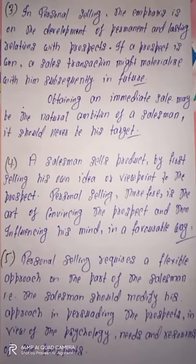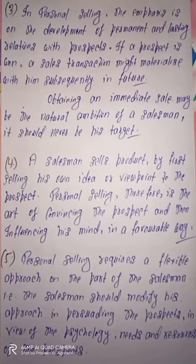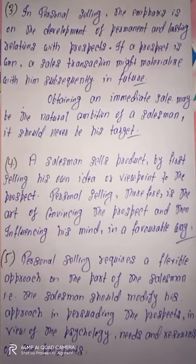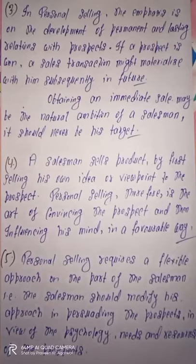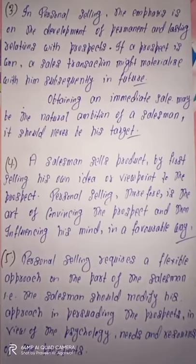The next feature is that personal selling requires a flexible approach on the part of the salesman. Flexible ka matlab hai ki use apne behavior mein modify karna padega as per the psychology, needs, and resources of the prospects. Salesman ko apni persuading approach mein modification karna padta hai accordingly, aur iske liye use taiyar rehna chahiye. Rigidity nahi chalegi — jaise customer hai, uske according behavior mein modification karna padega.